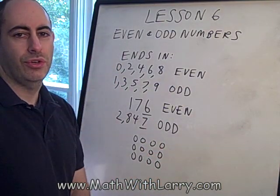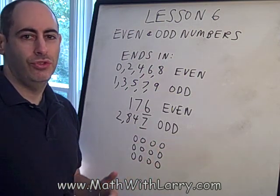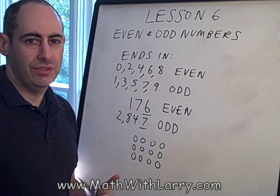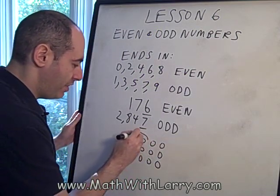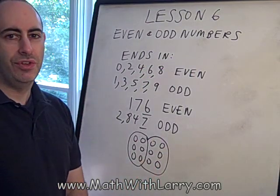Okay, so we have an even number of circles, and the fact that it's even means that I can divide up these circles into two equal groups, two even groups. The circles divide evenly, and we can easily do that like this. So, 12 is an even number.